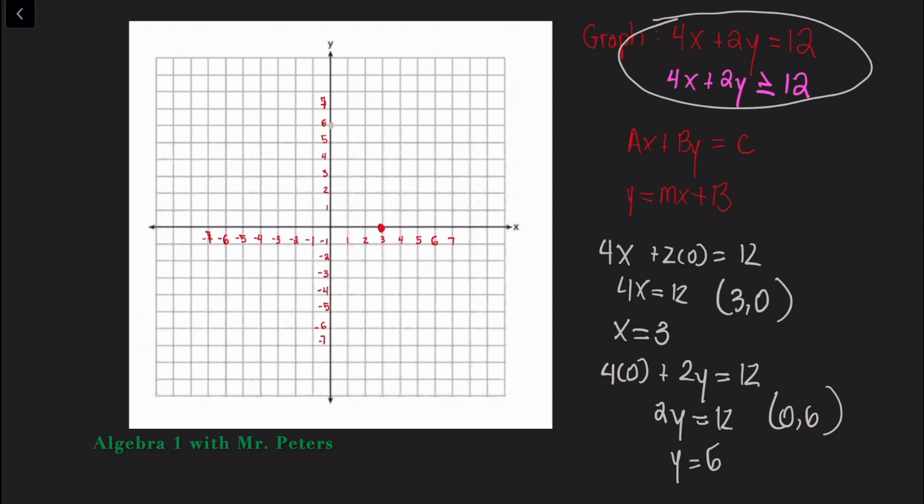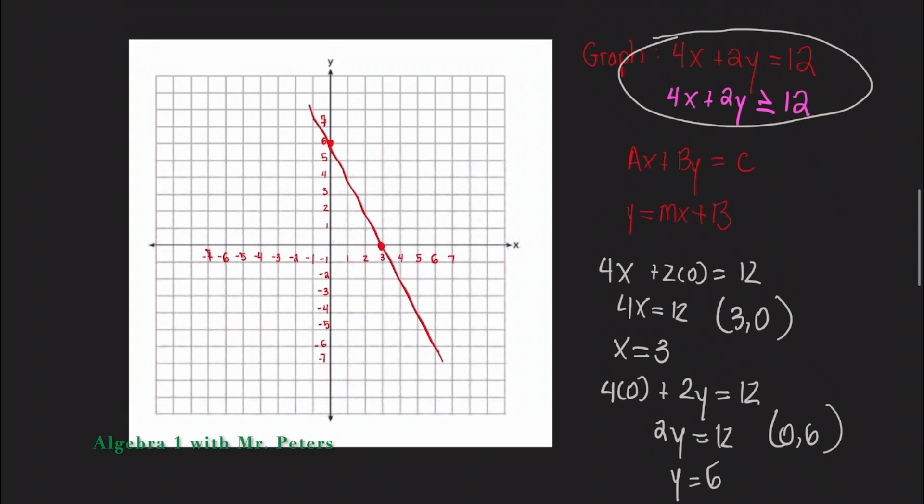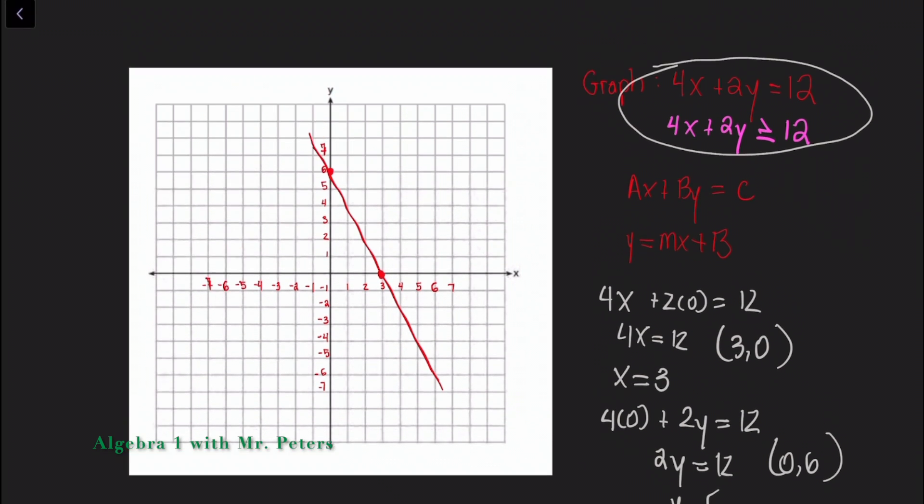So if I wanted to graph this by intercepts this is how I would do it and I would not need to know what the rise over run is or the slope. I'm sorry that my line isn't the most straight, trying to keep it straight for you. So that's one way we could graph.